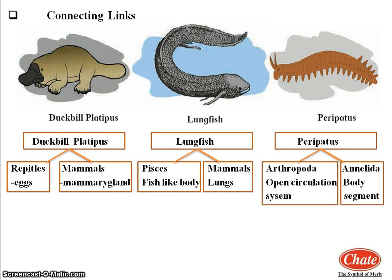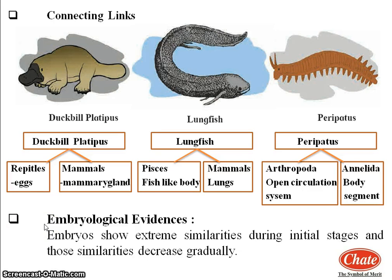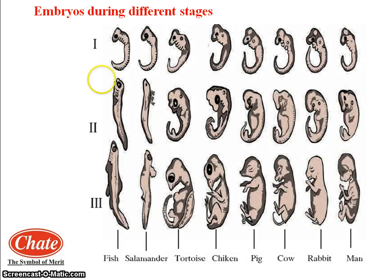The next and last evidence of evolution is embryological evidence. First we will see the definition of an embryo. An embryo is an unborn but developing child or animal, or something in the early stages that shows potential for development. If you do a comparative study of the embryonic developmental stages of various vertebrates shown in the picture, this picture shows that all embryos show extreme similarities during the initial stages.